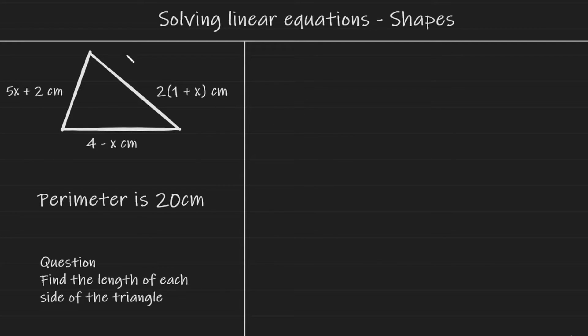So we're presented with this problem here, a triangle that has three sides, which are algebraic expressions. We've been given its perimeter, which is 20 centimeters, and finally the question: Find the length of each side of the triangle.